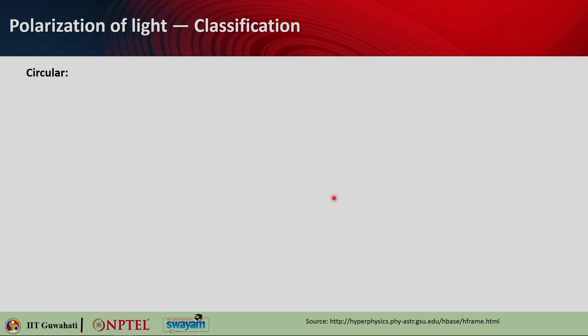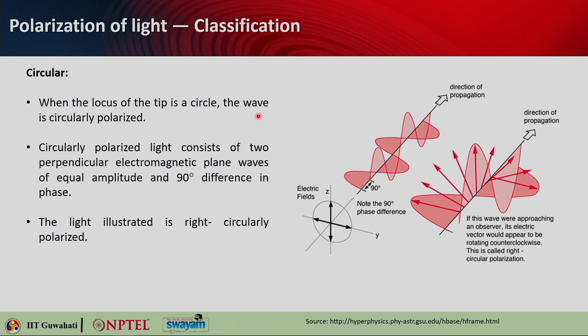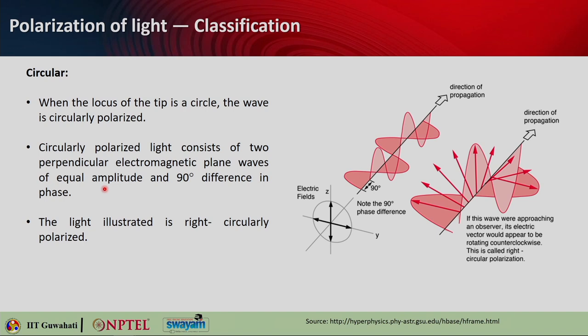The next type is circular polarization. In circular polarization, the locus of the tip is a circle — if you plot the trajectory of the electric field vector while it is propagating along z, the electric field vector draws a circle on a particular plane, and we consider this wave as circularly polarized. A circularly polarized light basically consists of two perpendicular electromagnetic plane waves of equal amplitude with a 90-degree phase difference between them.